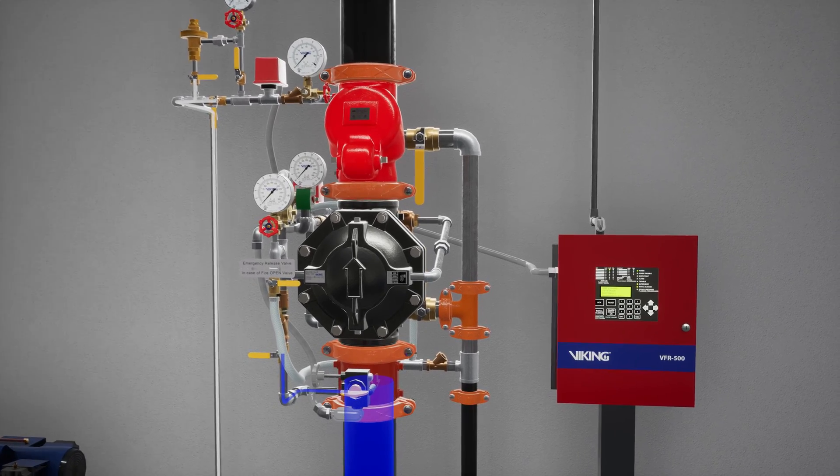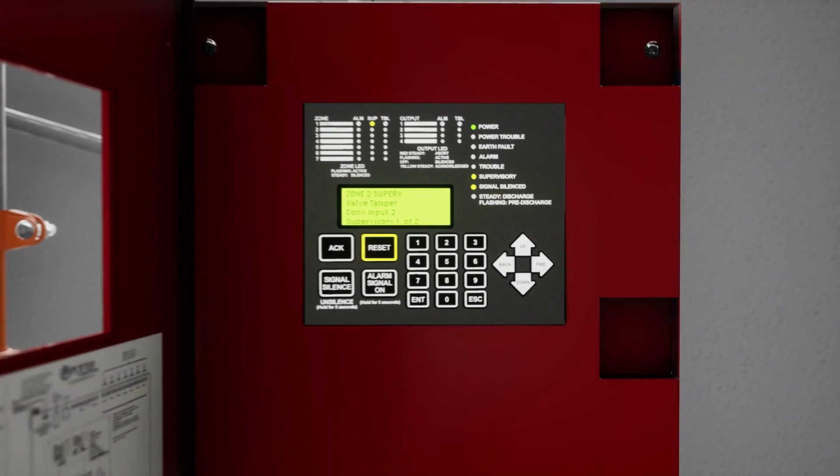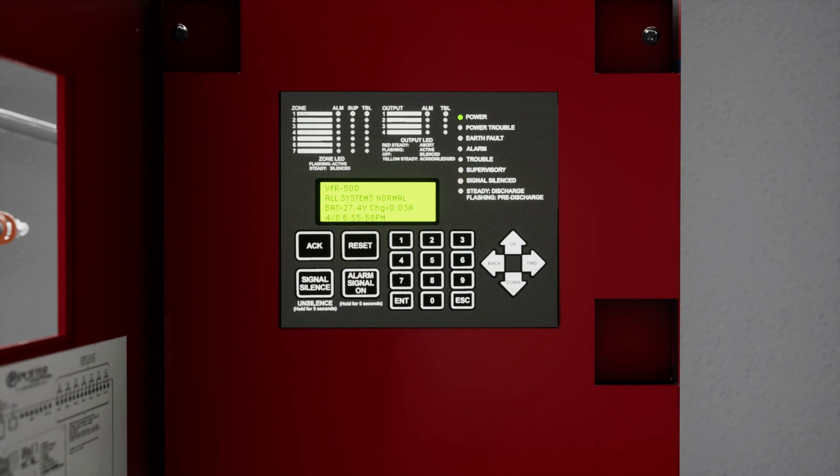Before we start, let's reset the panel to ensure the electric solenoid is closed. While this isn't required, we are going to silence the alarm panel. Press the silence button on the VFR 500 release control panel.